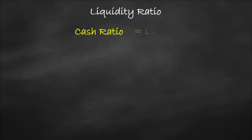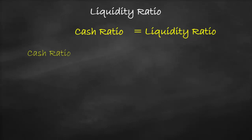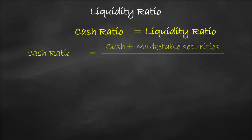An example of the liquidity ratio is the cash ratio. The cash ratio formula is cash plus near cash equivalents divided by current liabilities. We can write the cash ratio formula as cash plus marketable securities divided by current liabilities. We get the value of cash, marketable securities, and current liabilities from the balance sheet.